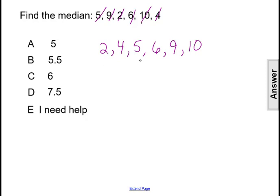Well, there is an even amount of data points. There are six data points. So we actually have two values in the middle. We have 5 and 6. So we need to find the mean of these two numbers.